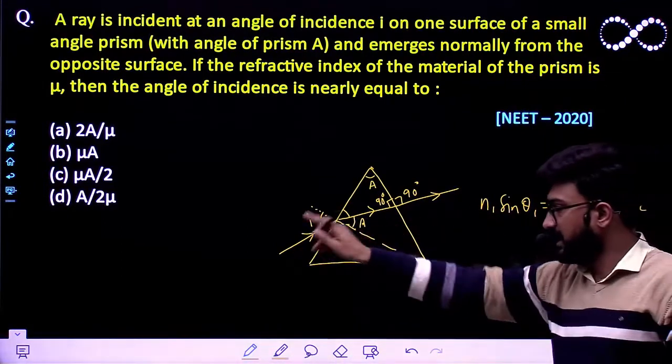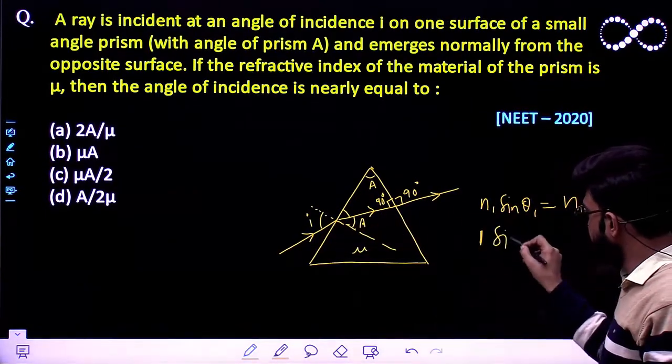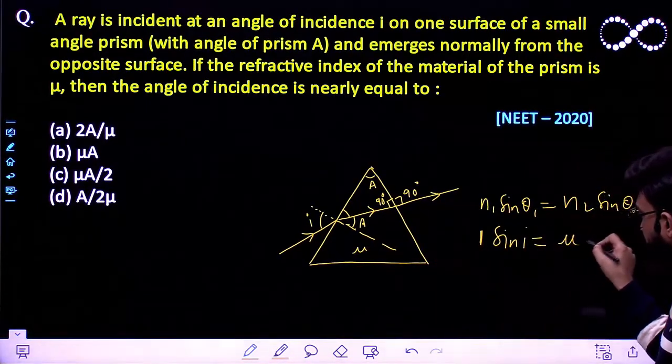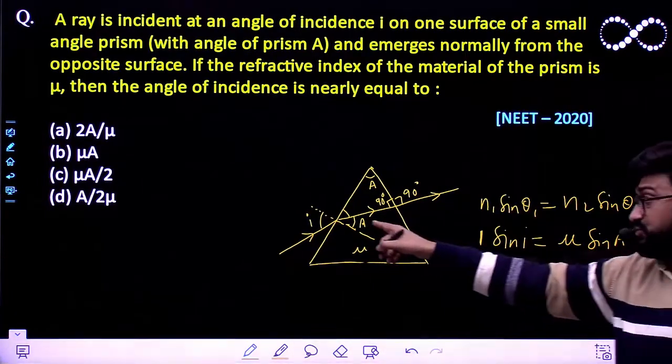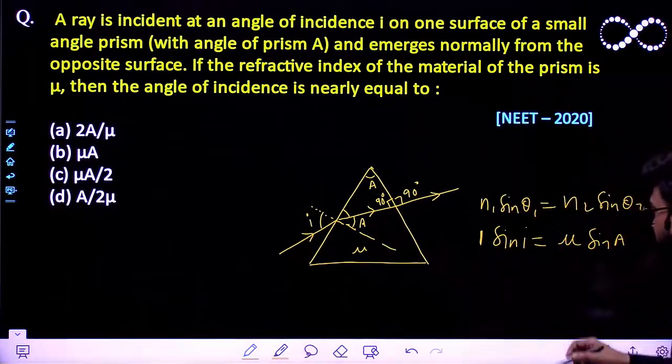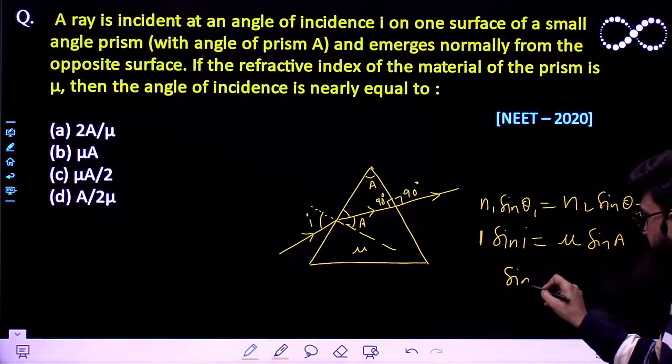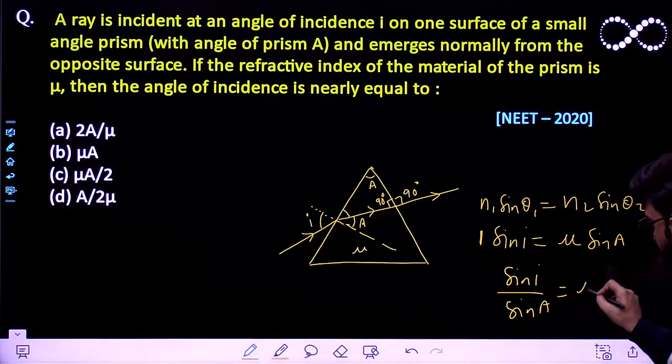So in this case, the refractive index of air is 1, so sin i must be equal to mu times sin A because angle of refraction here is A. From this you can easily write sin i by sin A must be equal to mu.